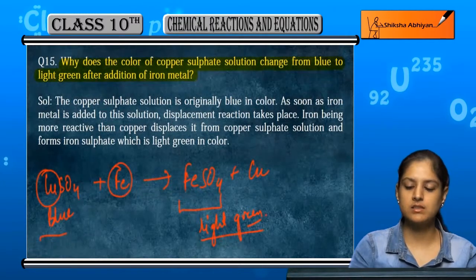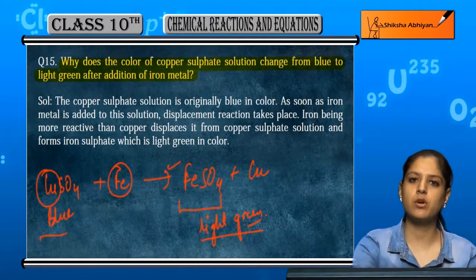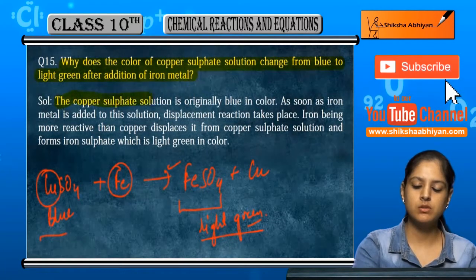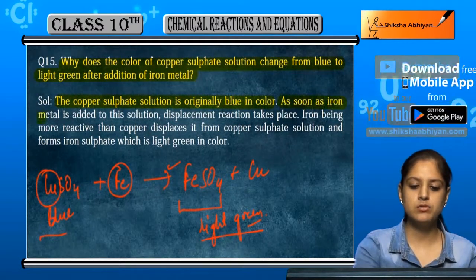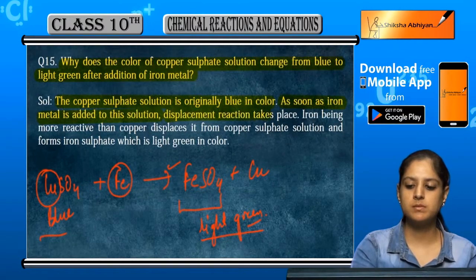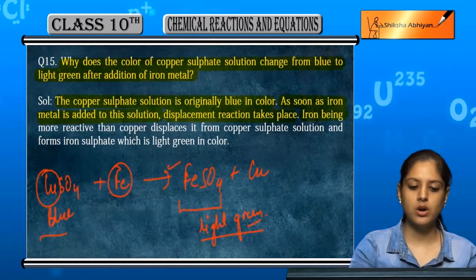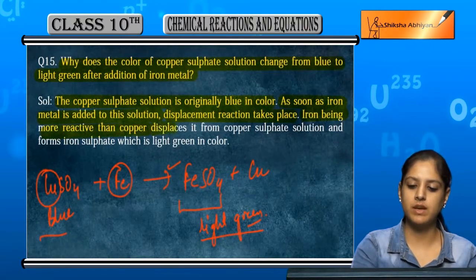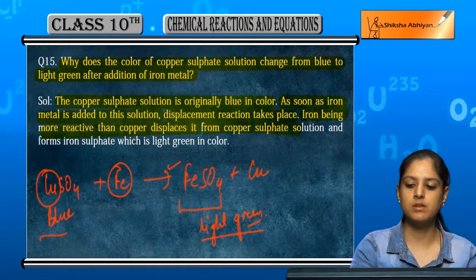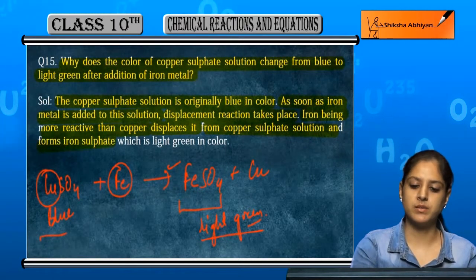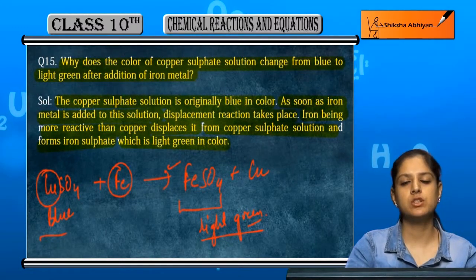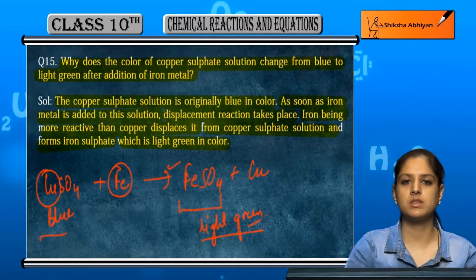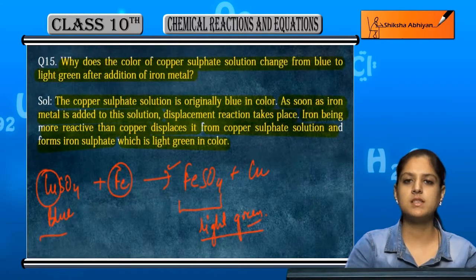So the change from blue to light green happens because FeSO₄ is formed. The copper sulfate solution is originally blue, but iron undergoes a displacement reaction with it. Because iron is more active than copper, it displaces copper from copper sulfate, forming iron sulfate, which gives a light green color — causing the color change to a new light green solution.